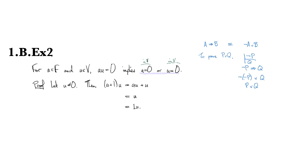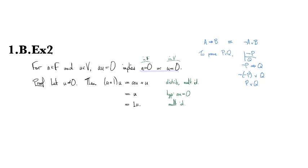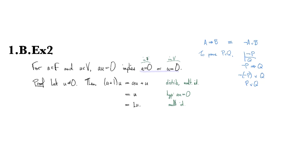So those justifications there: for the first one here, I used the distributivity and the multiplicative identity properties. Then for the second one, I used the hypothesis that a·u is equal to zero.